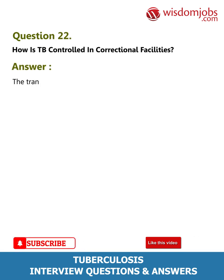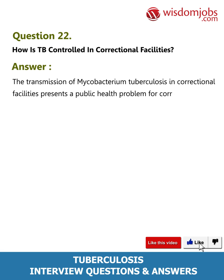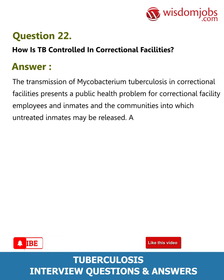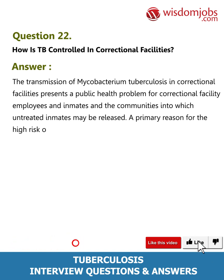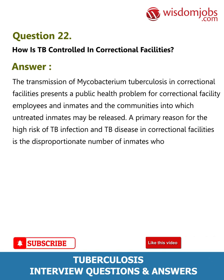Question 22: How is TB controlled in correctional facilities? Answer: The transmission of Mycobacterium tuberculosis in correctional facilities presents a public health problem for correctional facility employees and inmates, and the communities into which untreated inmates may be released. A primary reason for the high risk of TB infection and TB disease in correctional facilities is the disproportionate number of inmates who have risk factors for exposure to TB.